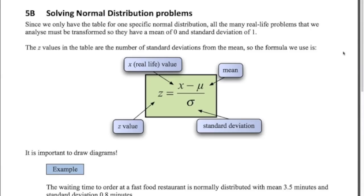Today we're going to look at problems where the normal distribution that we're given does not have a mean of zero and a standard deviation of one. Now the only table that we have is that particular normal distribution, so we have to convert all other normal distributions into this standard normal distribution. The way we do it is by this formula that you can see on the screen.